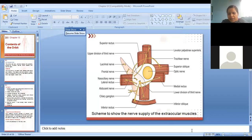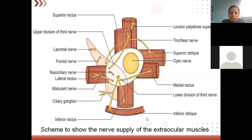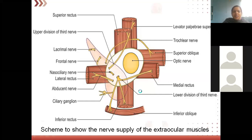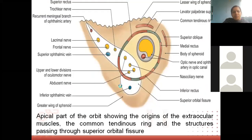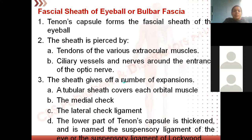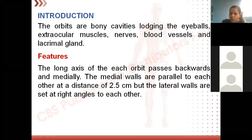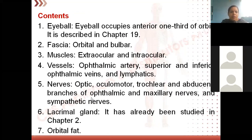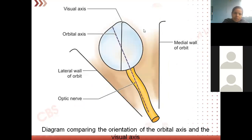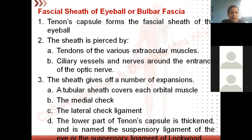On the screen you can see the contents of orbit. The orbits are bony cavities lodging the eyeball. Surrounding the eyeball we have extraocular muscles, nerves, blood vessels, and the lacrimal gland. We have extraocular and intraocular muscles. From the eyeball's posterior aspect comes the second cranial nerve — the optic nerve — which exits through the optic canal.